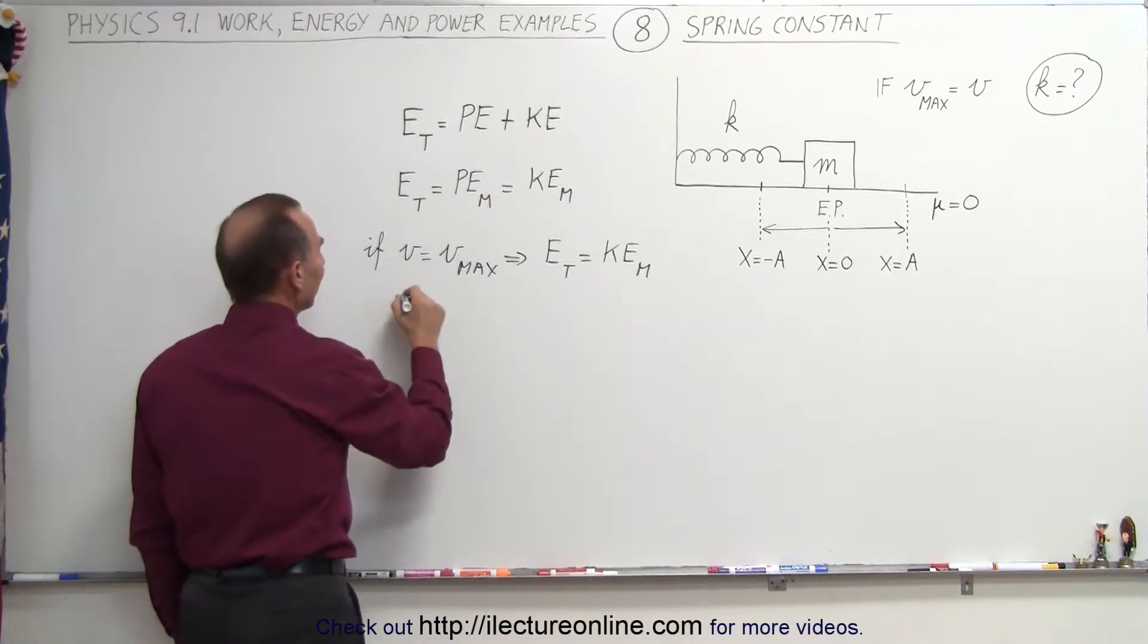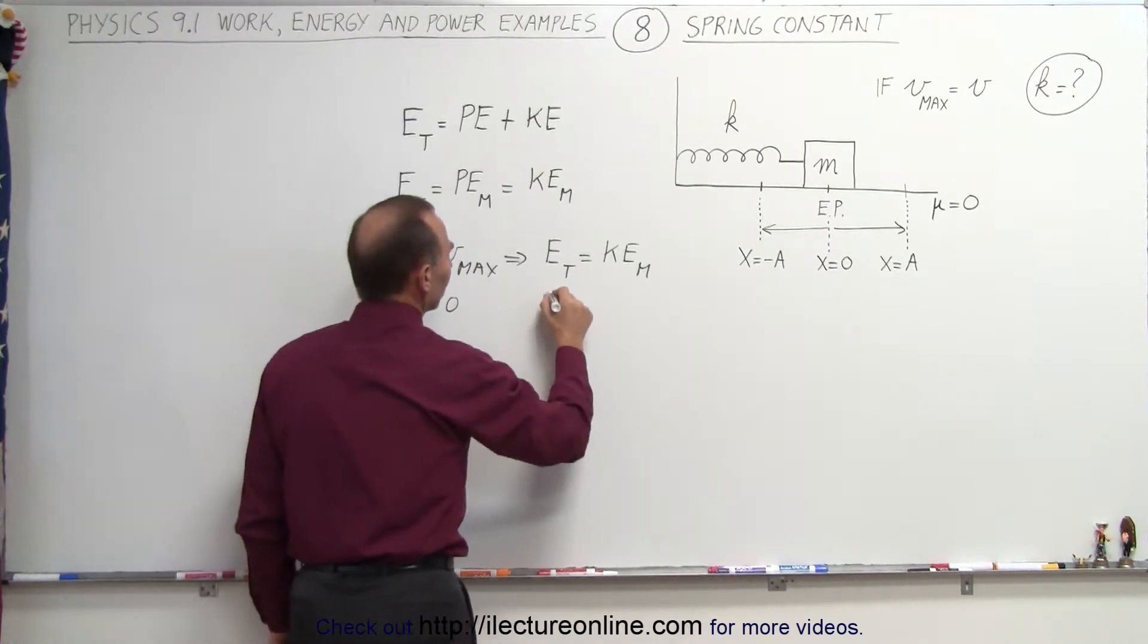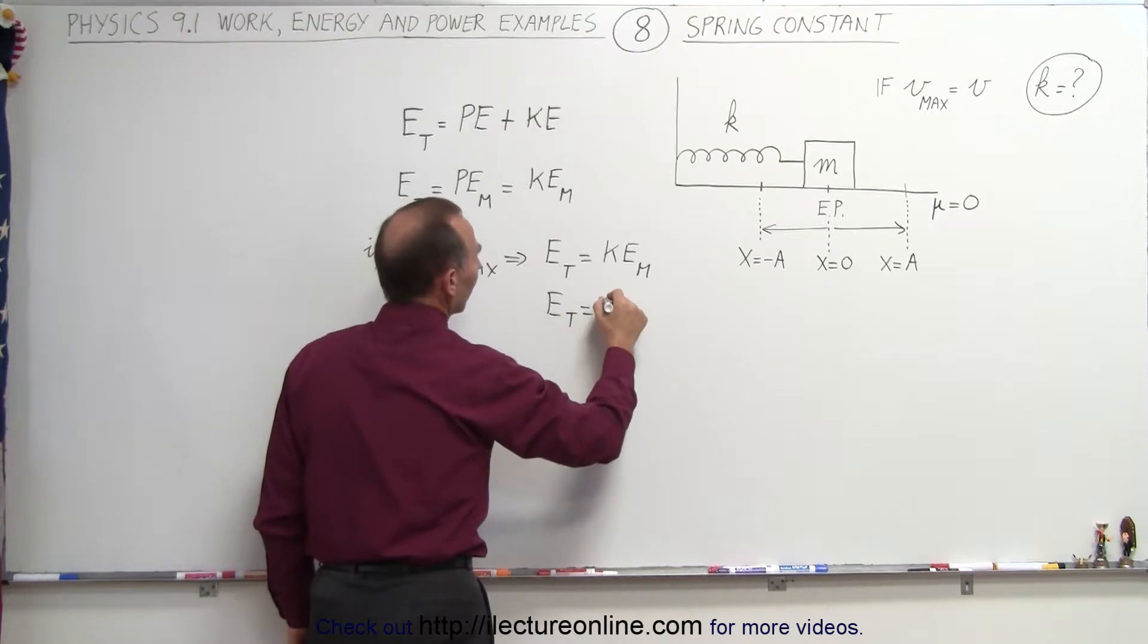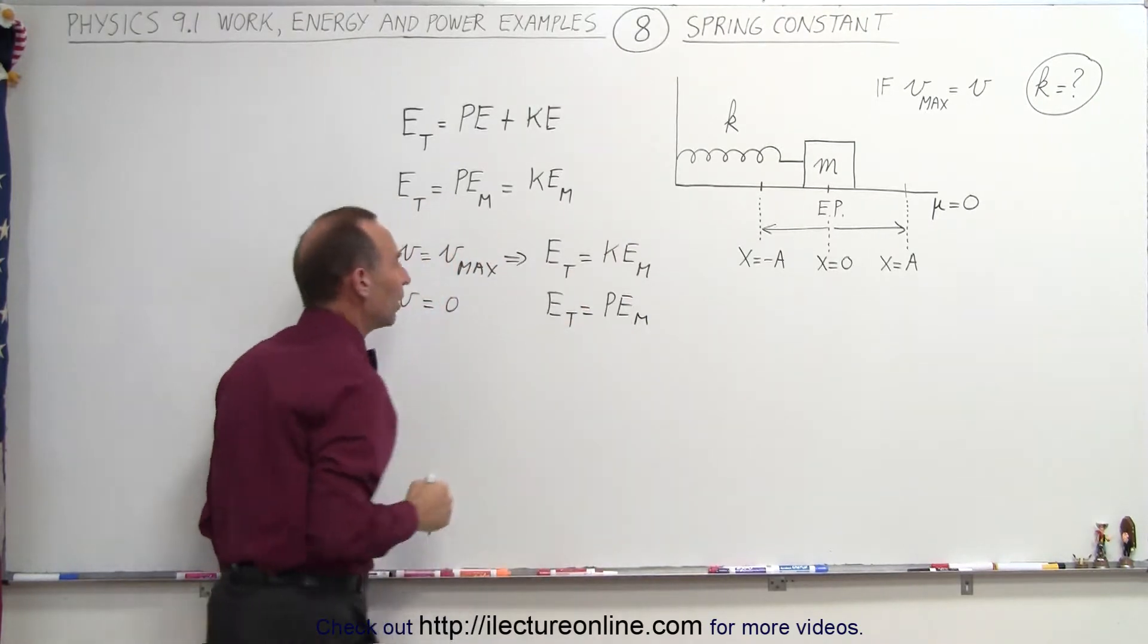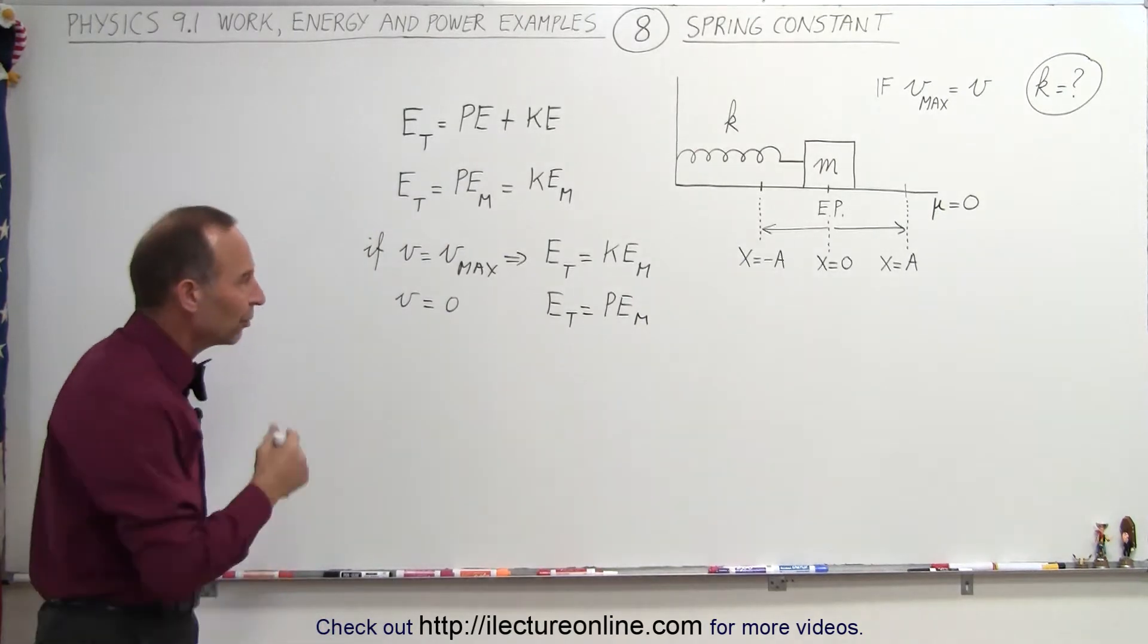And if v is equal to zero, then the total energy can be written as potential energy max. In other words, they are equal to one another; they just happen at different points in time.